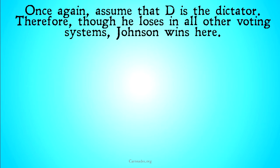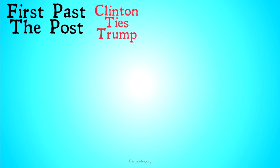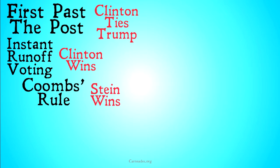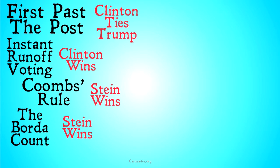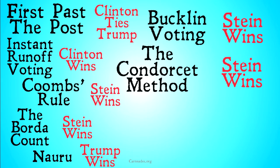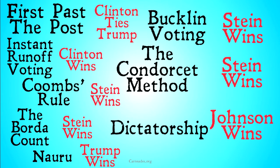Once again, assume D is the dictator. Therefore, though he loses in all the other voting systems, Johnson in fact wins here. First past the post had Clinton tying with Trump. Instant runoff voting had Clinton winning. Coombs rule had Stein winning. The Borda count had Stein winning. Nauru's Borda count had Trump winning. Bucklin voting left Stein as the winner, as well as the Condorcet method. And dictatorship had Johnson winning.